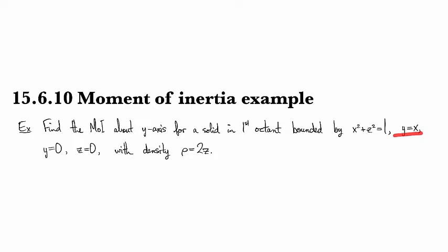So that runs down the y-axis. And the plane y equals x, so that's diagonally cutting through the first octant. And y equals 0, the xz plane, and z equals 0, the xy plane, with some density 2z.